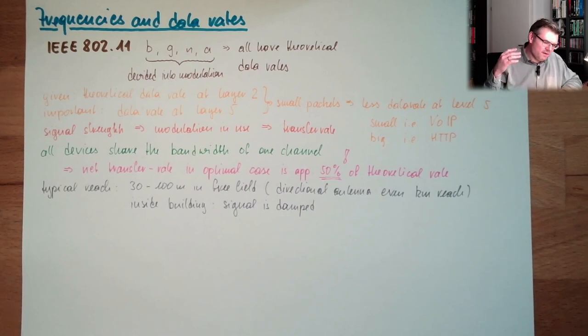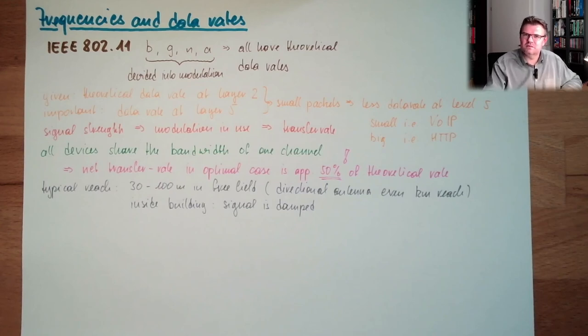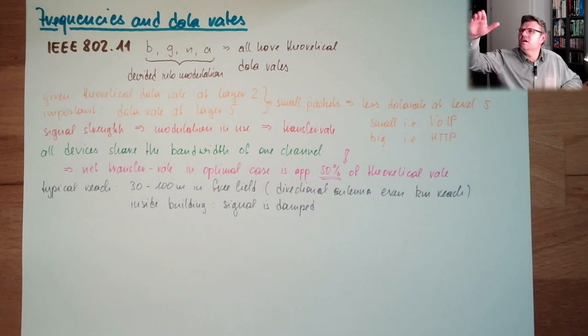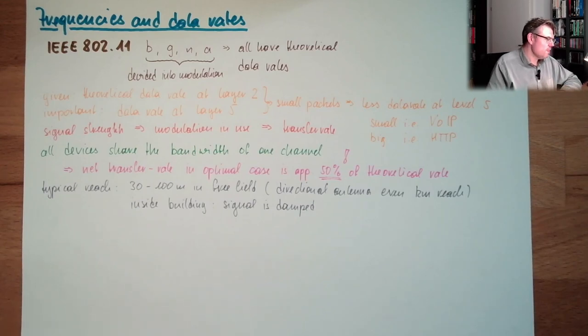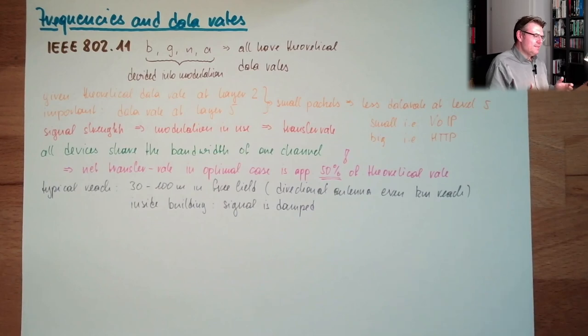On the other hand, some surfaces might even reflect and we get further. So you cannot even tell, but usually you have a significant reduction of range inside buildings. There's a lot of iron inside a concrete wall and this all has influence. The more conductive material, the more damping there is.